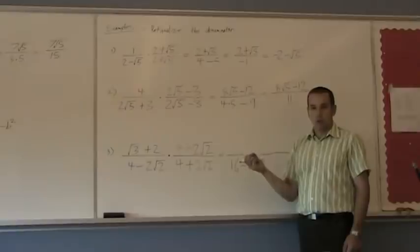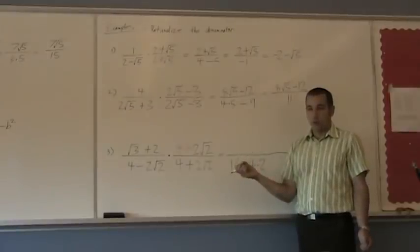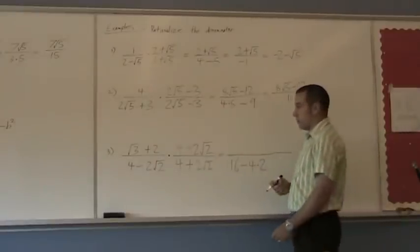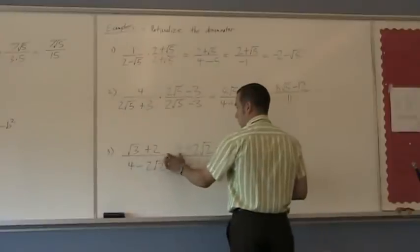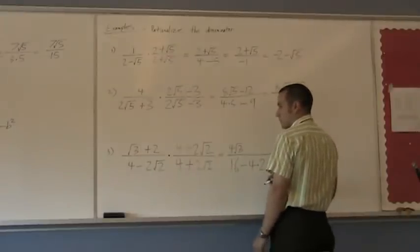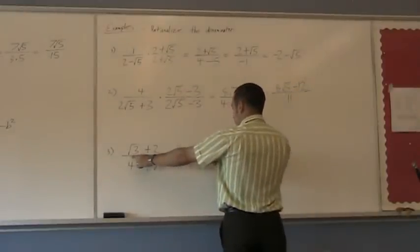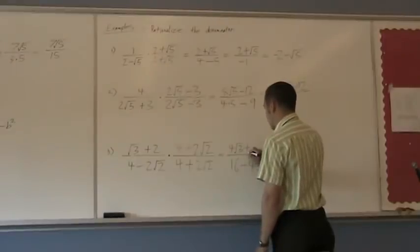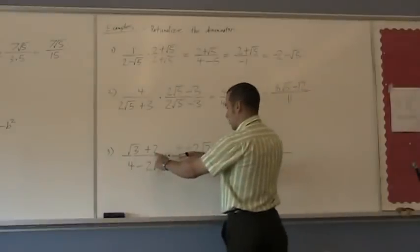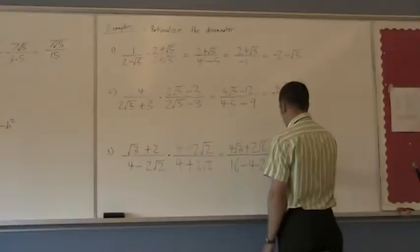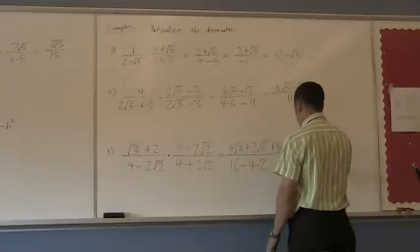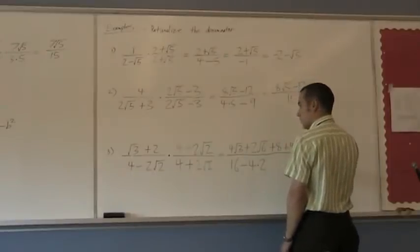Now, the top is a little harder. This is where we use multiplying out binomials. Remember back to using FOIL. First times first, so square root of 3 times 4 gives me 4 square root of 3. Next up is the outside. So square root of 3 times 2 square root of 2. This gives me plus 2 square root of 6. And the inside, 2 times 4 gives me 8. So plus 8. And then the last, 2 times 2 square root of 2, which leaves me with 4 square root of 2.